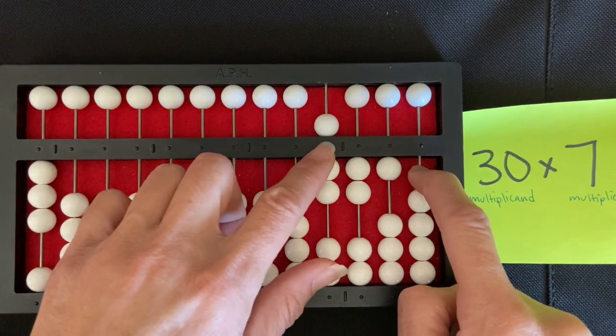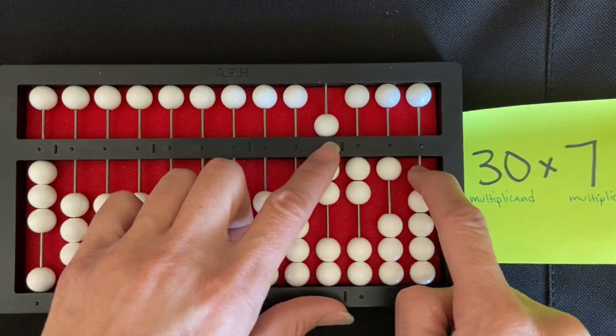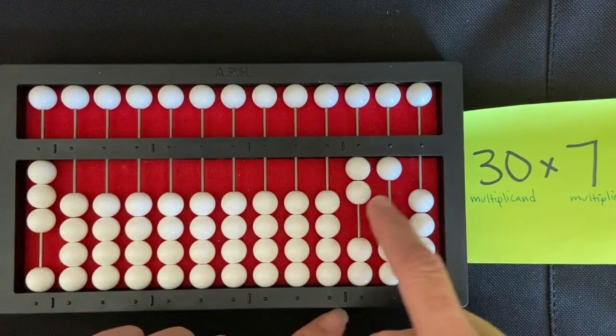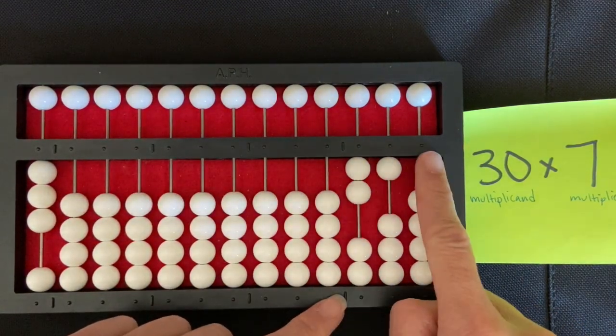And before I can read my product, I'm going to clear my multiplier, and then I can read my product, which is 210.